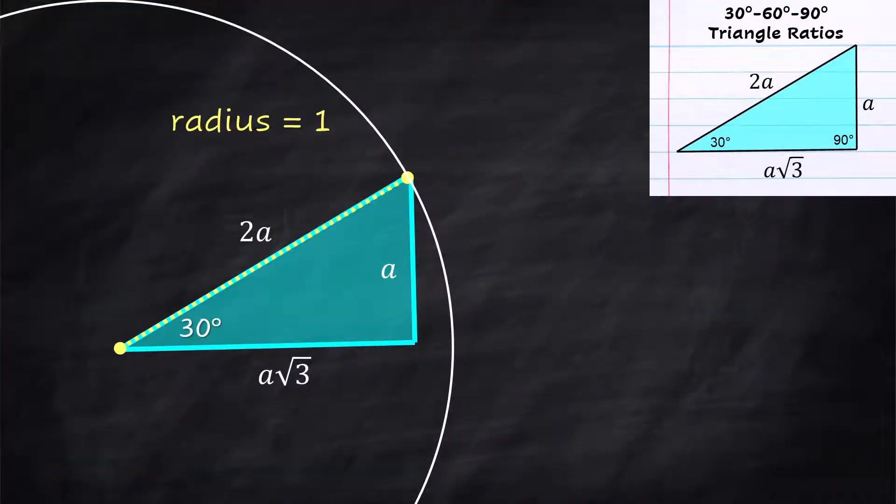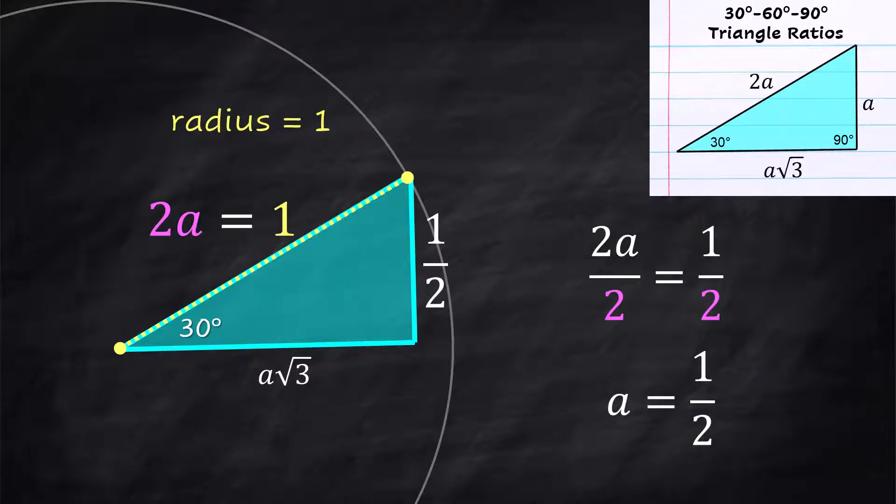We know that the radius is 1. So that means the hypotenuse is 1, which means 2A equals 1. Do a little math. Divide both sides by 2. A is 1 half. Well we know that the side right here is 1 half. Now I want to caution you, this triangle doesn't go all the way over to the circle. So I know that the 1 is the hypotenuse and not this leg here. Take the 1 half times the square root of 3. Multiplying those two out, you get the square root of 3 over 2.